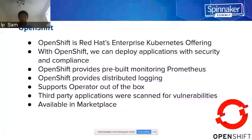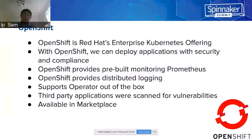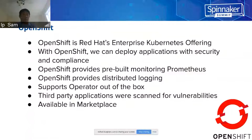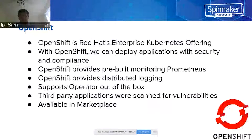Let's first understand OpenShift. OpenShift is a Red Hat enterprise Kubernetes offering. With OpenShift you could deploy applications with security and compliance. OpenShift provides built-in monitoring using Prometheus, Alert Manager, and Grafana dashboard. OpenShift also provides distributed logging and supports the operator out of the box. Applications will be scanned for security and vulnerability and available in the marketplace.